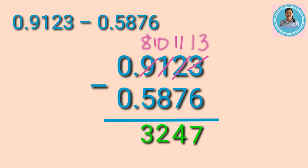Since there is no whole number to be subtracted, let's write 0 and then put the decimal point in the difference. So the answer is 3.2471 ten-thousandths.